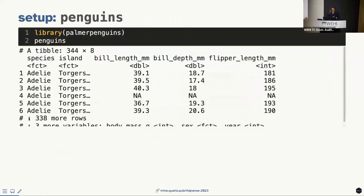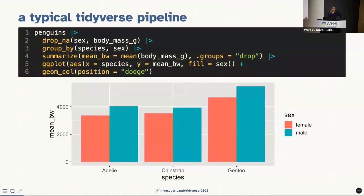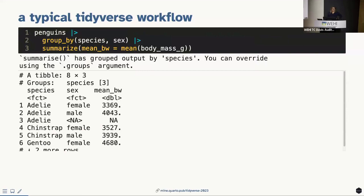I'm going to use the Palmer Penguins dataset for some of my examples here. It is a dataset of a little over 300 penguins with body measurements as numerical variables and a couple of categorical variables like species, island, and sex. A typical tidyverse pipeline starts with a data frame, does some transformations, and then visualizes it — for example, grouping by species and sex.